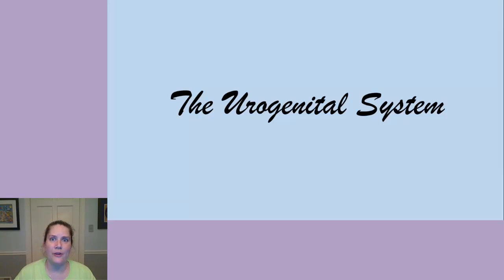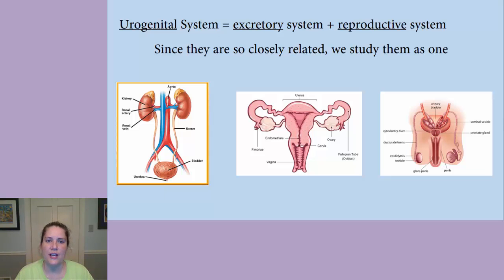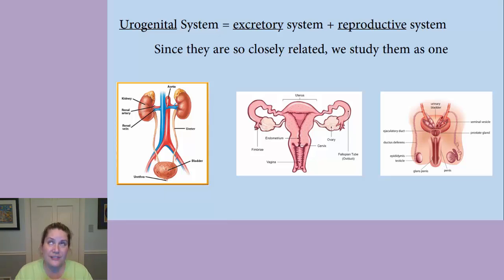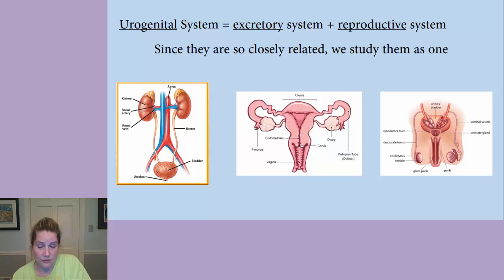We're going to talk about the urogenital system now, just the first part. We're going to start by defining it. It's actually two systems put together: the excretory system and the reproductive system. They're really closely related and even share some of the same structures, so we often study them together and call it the urogenital system. The 'uro' part is the excretory system, and the 'genital' part is the reproductive system — so, urogenital.